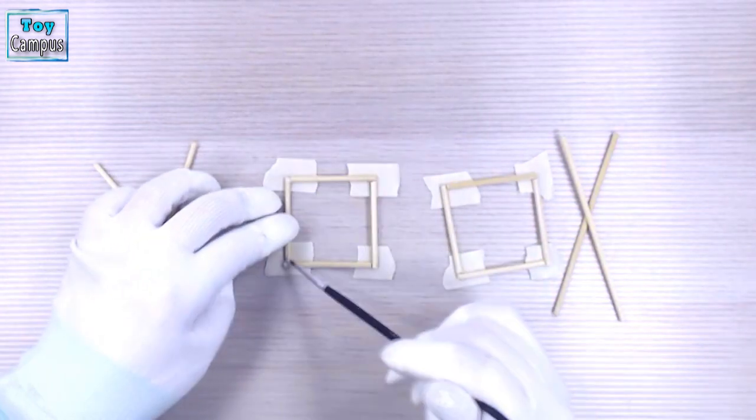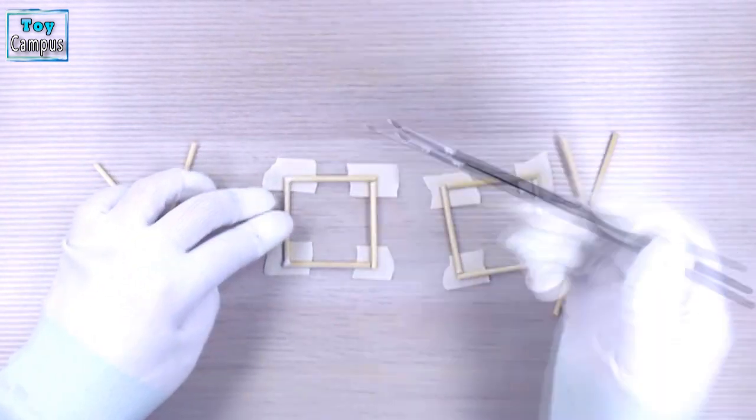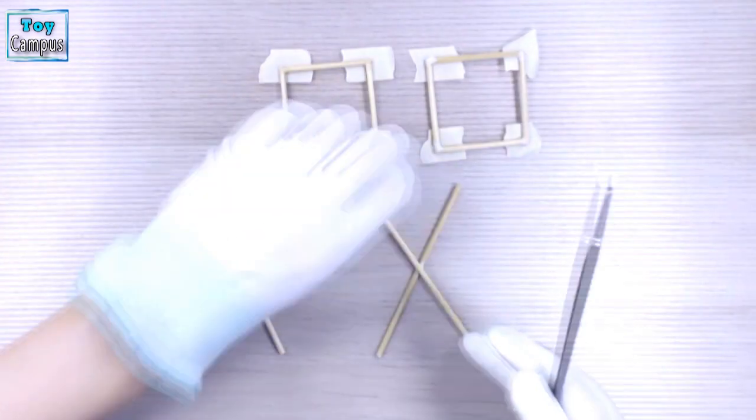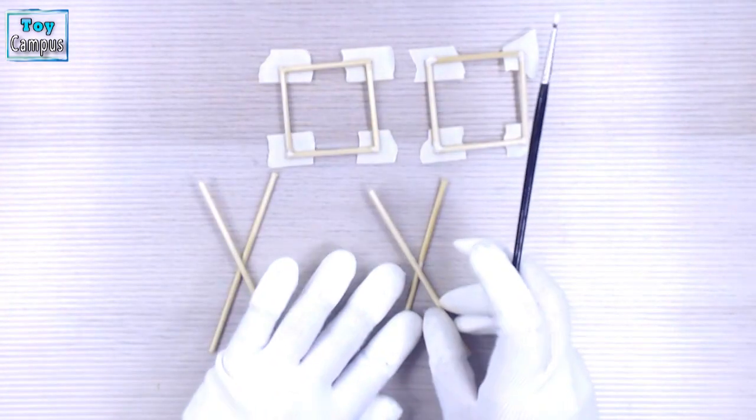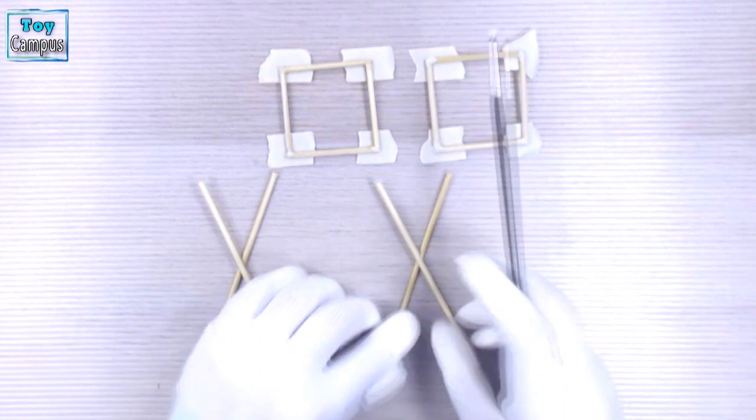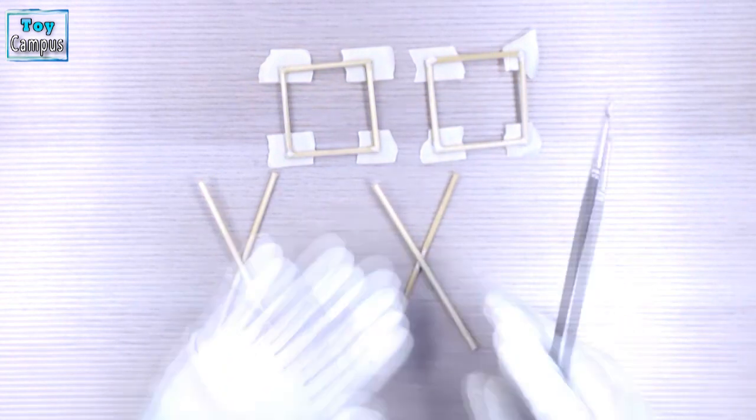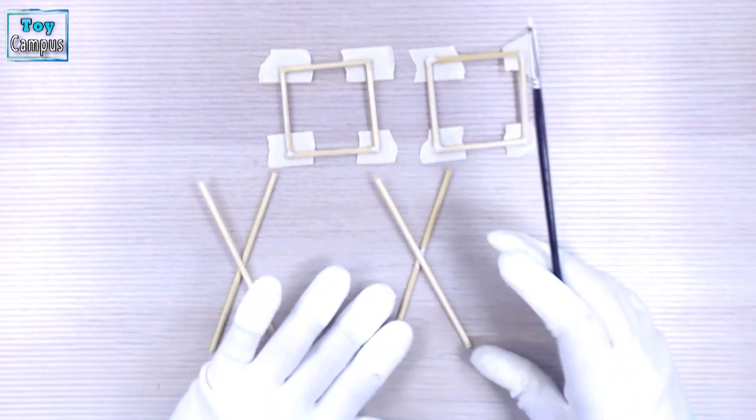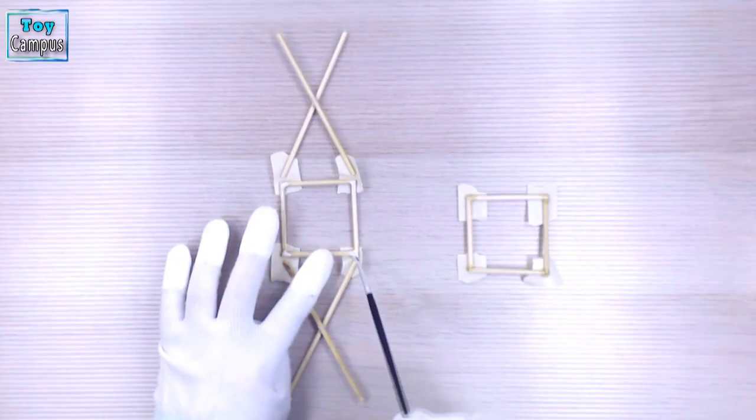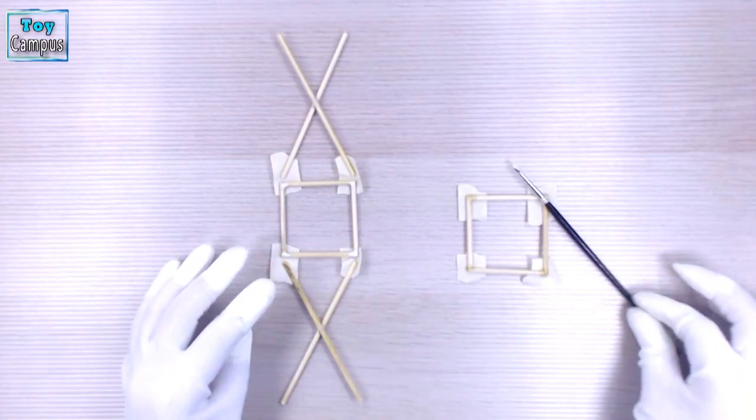To make the laundry hamper, we started by cutting wooden sticks. Four equally sized sticks for the top and bottom edge, and two longer sticks for each side. Then we glue them together to form the frame. The frame is then painted brown.